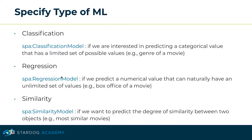There is also a regression model: if we want to predict a numerical value that can naturally have an unlimited set of values — such as the box office of a movie — we use spa:RegressionModel. And finally, if we want to predict the degree of similarity between two objects, for example to identify the most similar movies, we use spa:SimilarityModel.